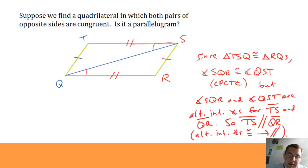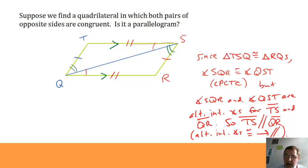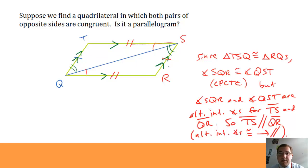So I've got that one set of lines are parallel: TS is parallel to QR. Analogously, I have another pair of alternate interior angles. Angle QSR is congruent to angle TQS. By the same process, that tells me that TQ is parallel to SR. So then I have a quadrilateral in which both pairs of opposite sides are parallel, and that's exactly the definition of a parallelogram. So I know that quadrilateral TSRQ must be a parallelogram.